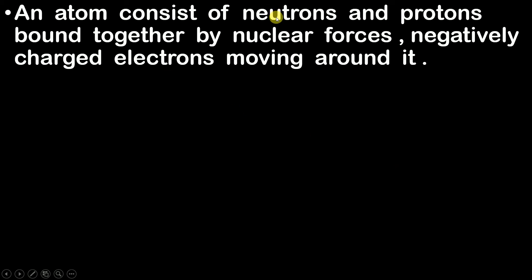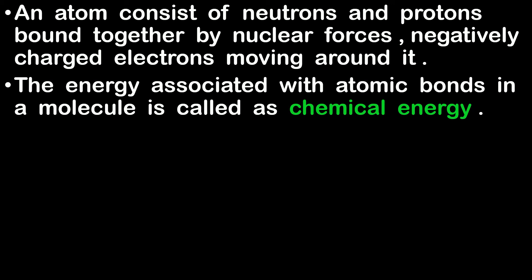The sixth microscopic form of energy: an atom consists of neutrons and protons bounded together by nuclear forces inside the nucleus. There is some energy keeping them bonded. The negatively charged electrons are also moving around the nucleus, and there is some energy keeping the electrons in orbit and not allowing them to escape. The energy associated with the atomic bonds in a molecule is called chemical energy.